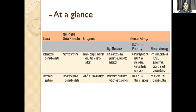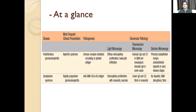Goodpasture's syndrome — anti-GBM — shows extracapillary proliferation with crescents. The crescents are also seen in rapidly progressive glomerulonephritis. Goodpasture's syndrome is one form of RPGN wherein crescents are seen, usually because of proliferating parietal epithelial cells. There is no necrosis. Linear IgG and C3 with no granular deposits; GBM disruption; fibrin cells on electron microscopy.